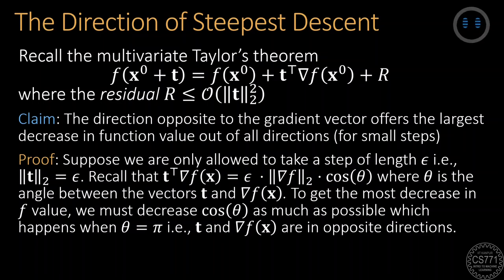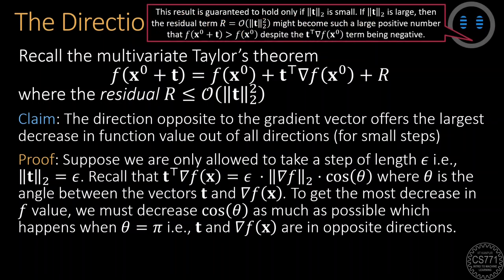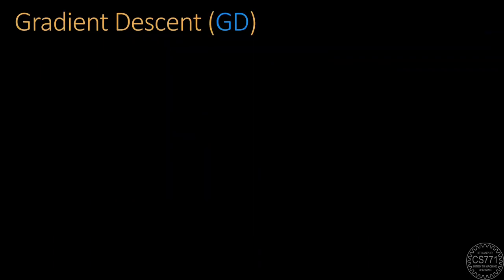Note that this result may fail if we move too much, since in that case the residual term may become so large that the function value increases even though we move opposite to the gradient. This simple realization gives us arguably one of the most popular optimization techniques out there, gradient descent.